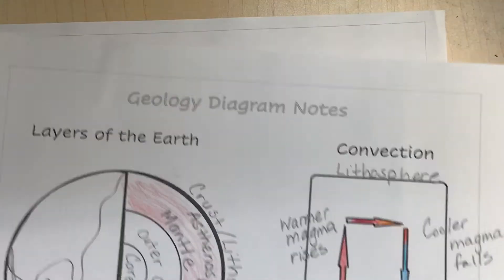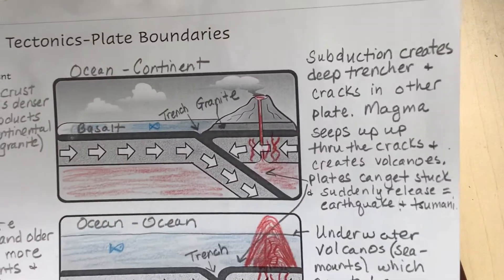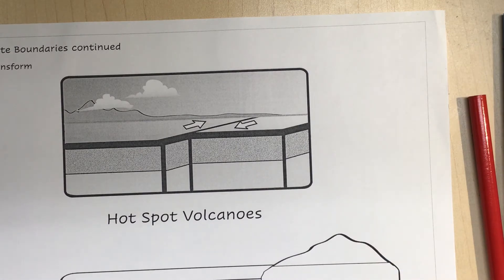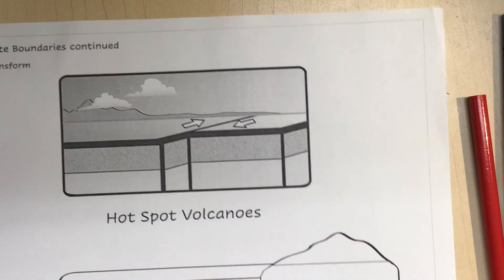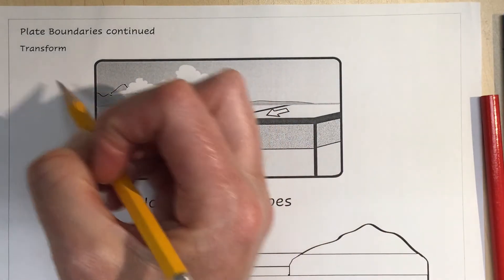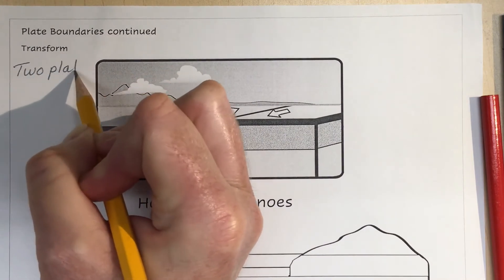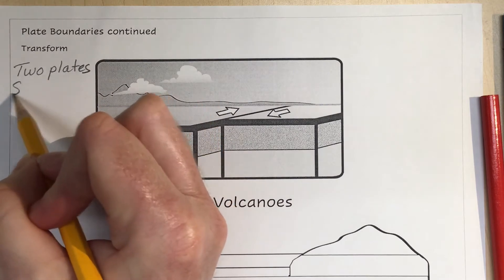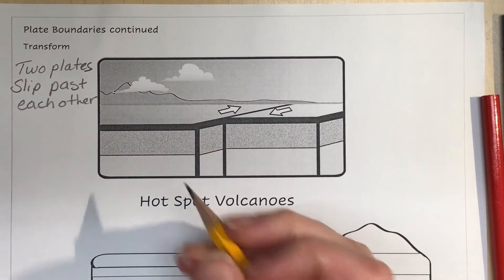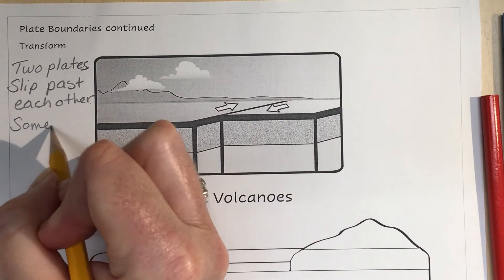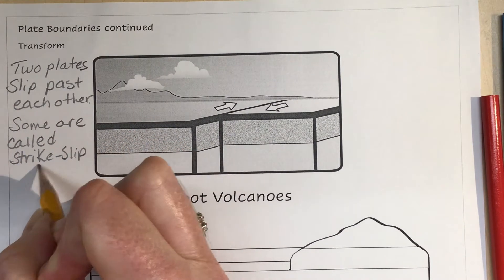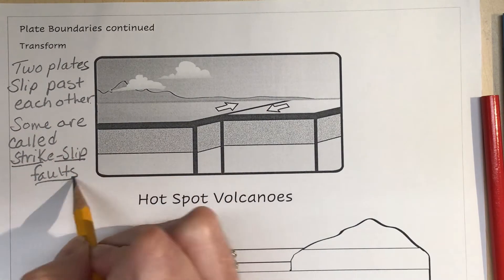Continuing on with our geology notes — we did page one, then page two, and now we're on page three. This is the third type of plate boundary: a transform plate boundary. We're not going to draw magma here because it doesn't come into play. The two plates slip past each other, and some of them are called strike-slip faults — I've seen that term on the AP test.